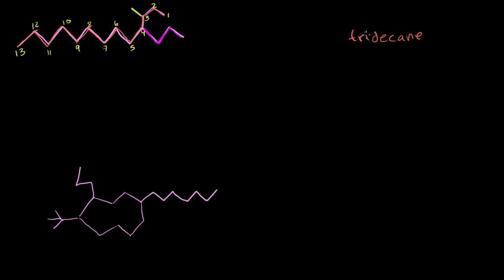Tridecane is the main chain. And then we have two groups over here. This one in green, this only has one carbon branching off of the main chain, so its prefix will be meth. Then it'll be a methyl group. That is methyl. And then this one down here, we have 1, 2, 3 carbons. The prefix is prop. So this is a propyl group.